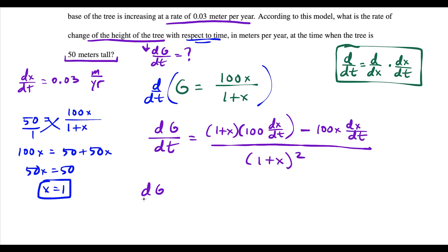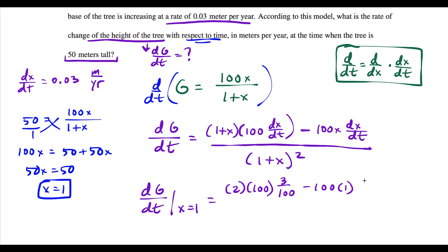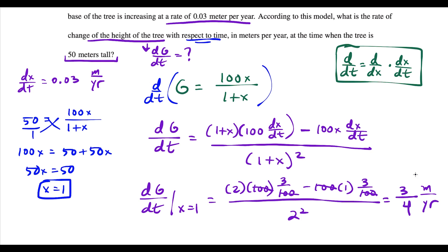Plugging in x equals 1 and dx/dt equals 0.03 (written as 3/100): dg/dt equals [(1 plus 1) times 100 times (3/100) minus 100 times 1 times (3/100)] divided by (1 plus 1) squared. The 100s cancel, giving (6 minus 3) over 4, which equals 3/4. The units are meters per year, so the final answer is three-fourths meters per year. Thanks for sticking it out to the end — we'll see you next time.